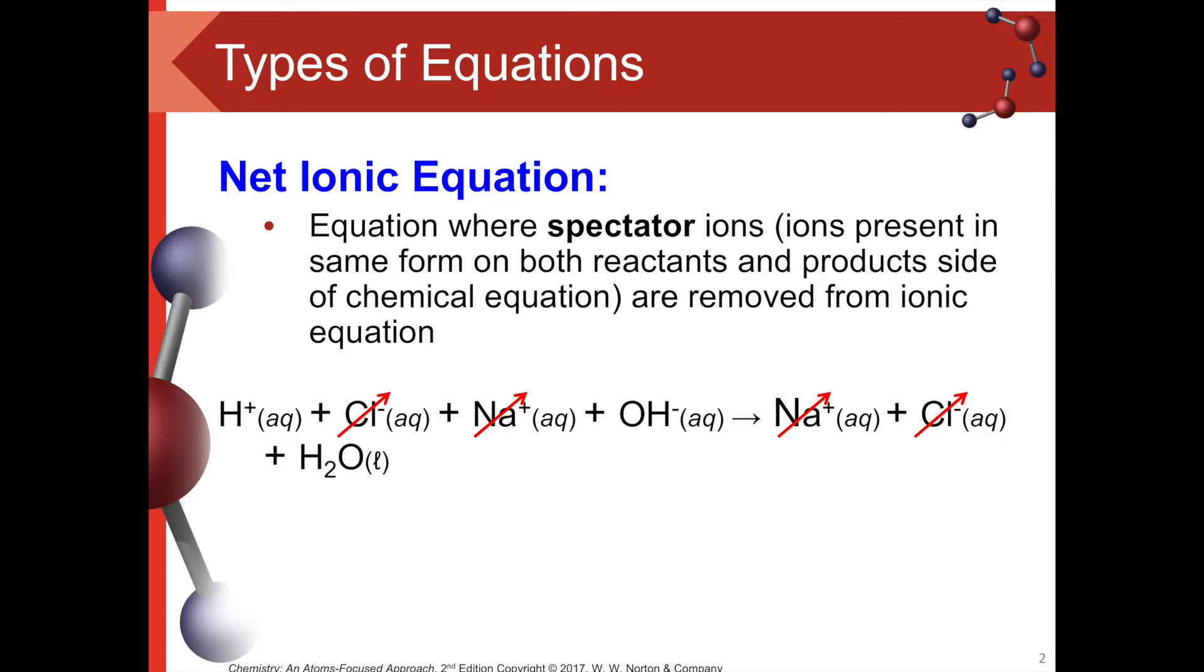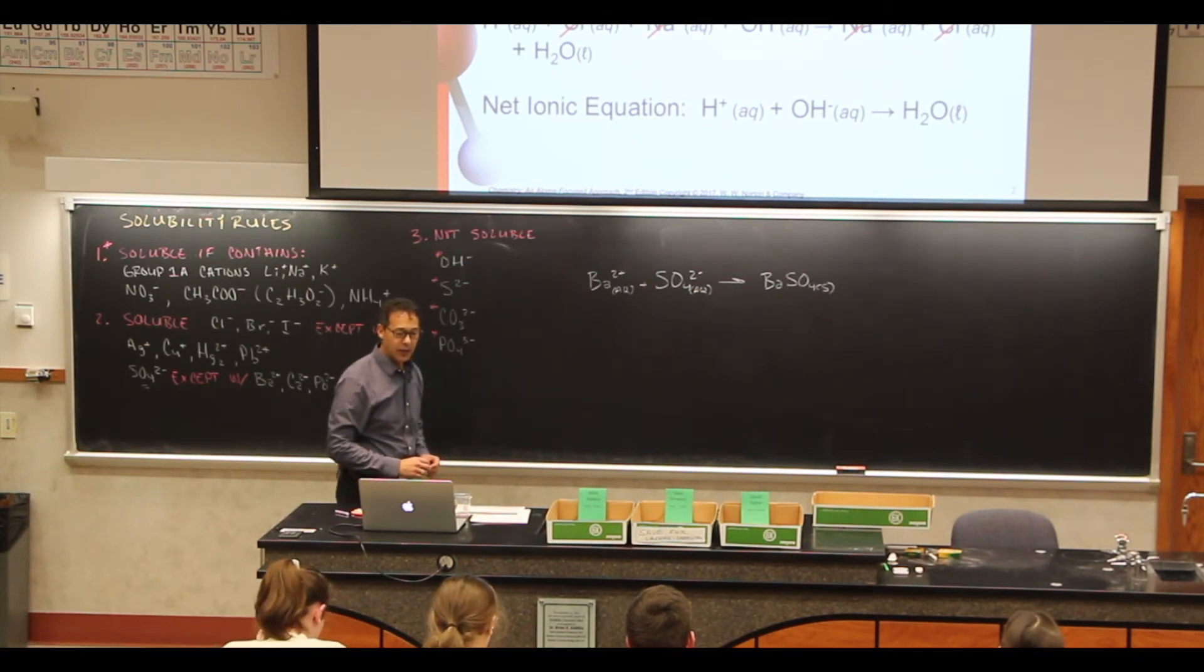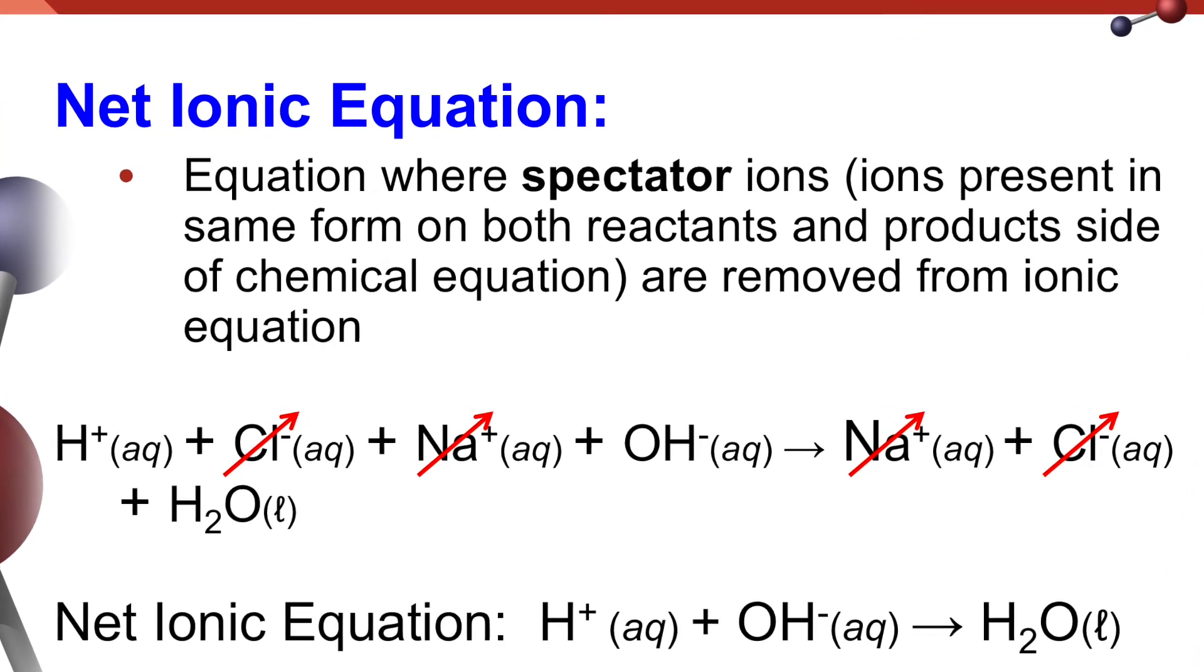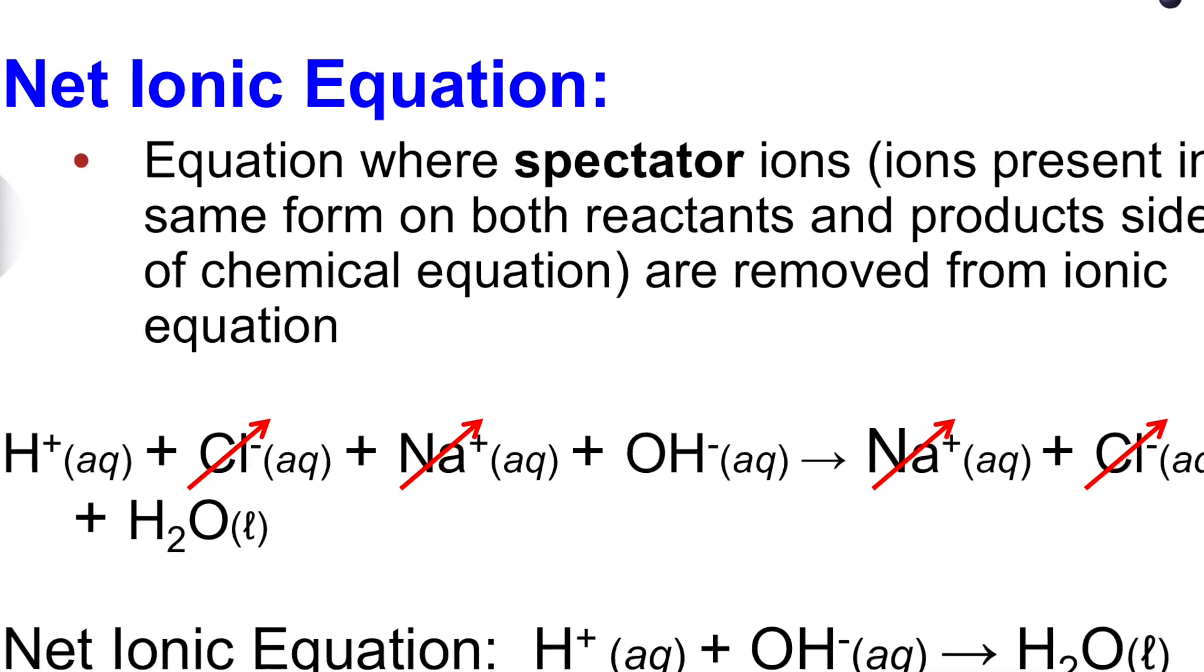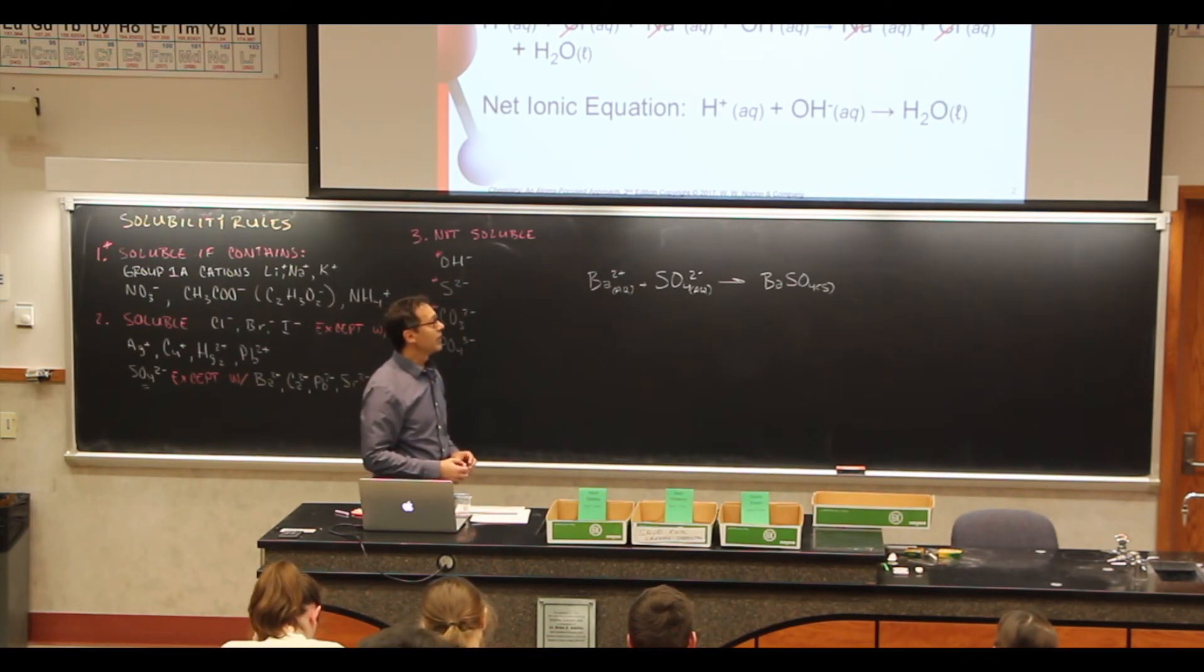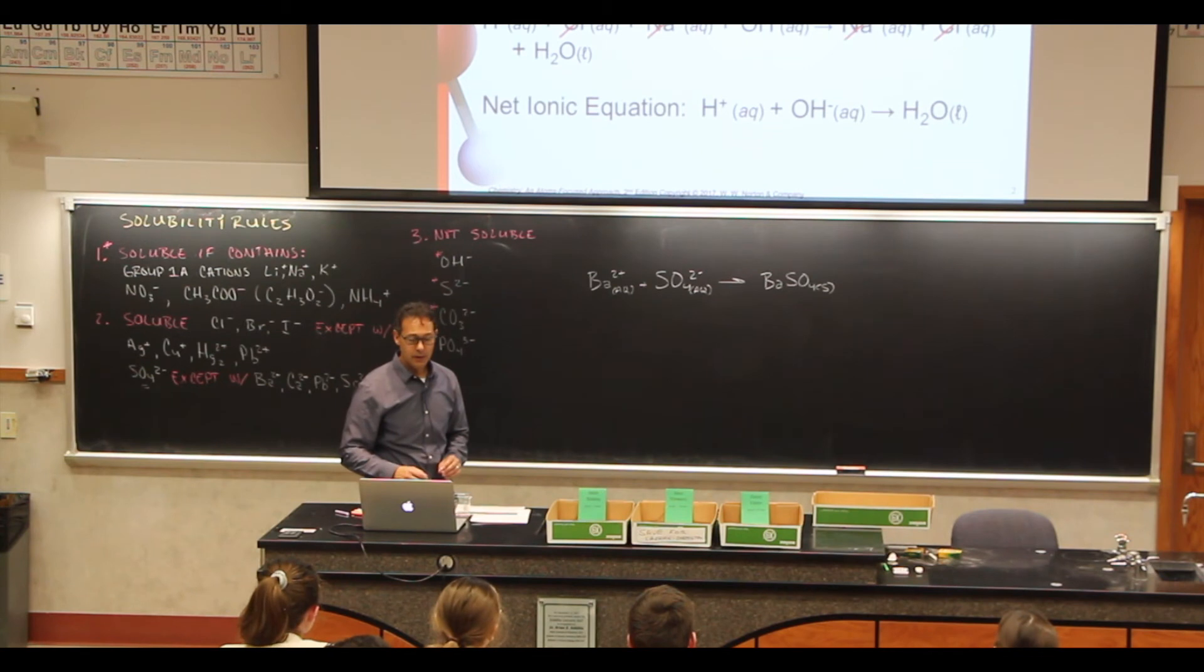So if nothing changes on either side, these are spectator ions, and we cancel those out. And then that leaves us with water. And so our net ionic equation for this one is hydrogen ion plus hydroxide ion gives us water. And so we don't really think of water as being a precipitate, but this is an example where our net ionic equation here is water. It's a little odd, a little weird, just kind of one of those odd little nuggets.